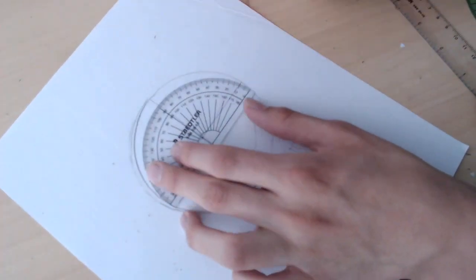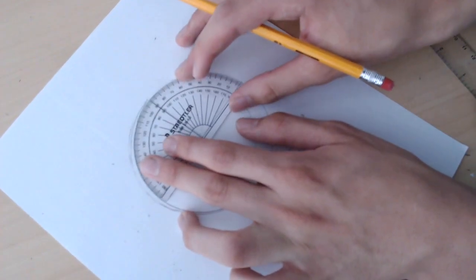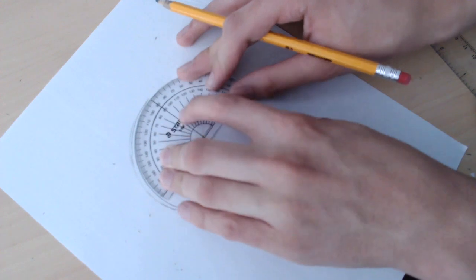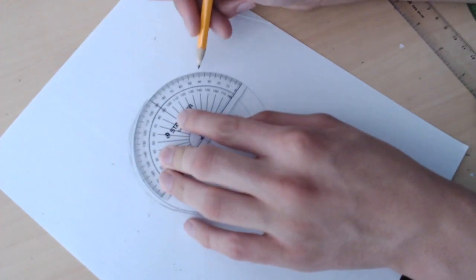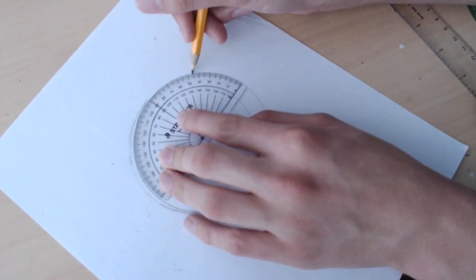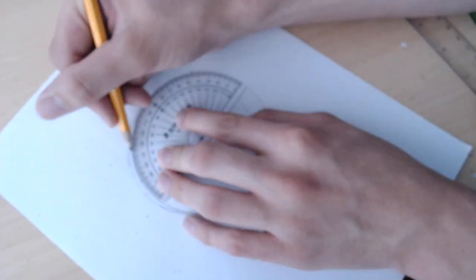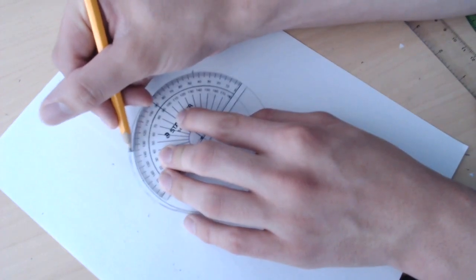So to do that, this is where the protractor comes in, which conveniently actually almost fits this circle perfectly. But we can mark it out at 45 degrees and 135 degrees.